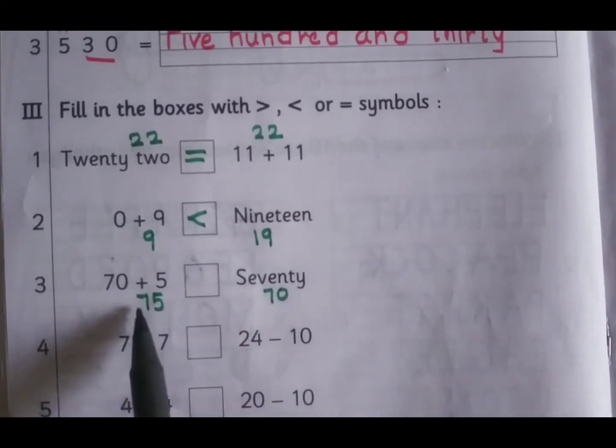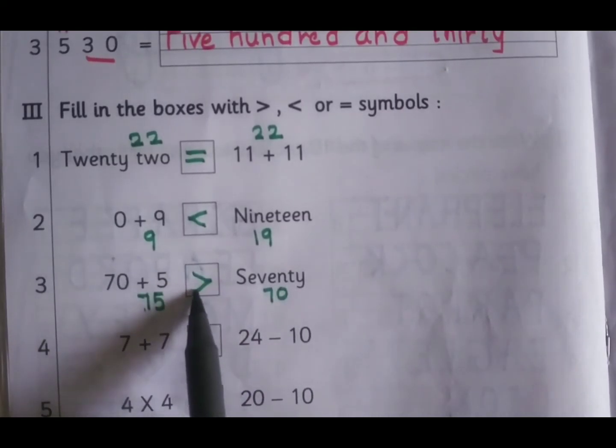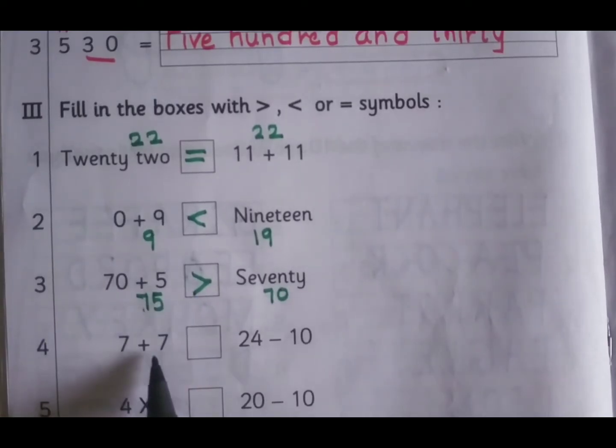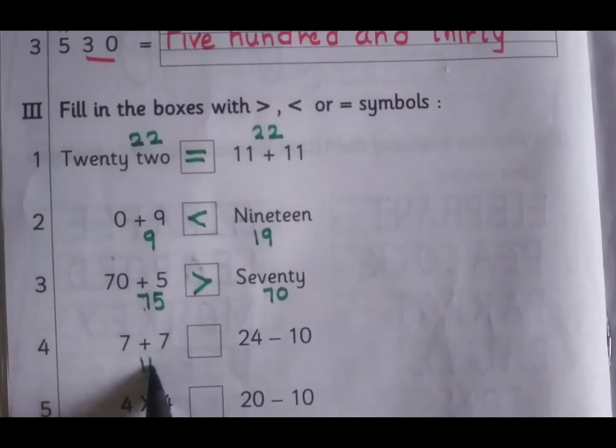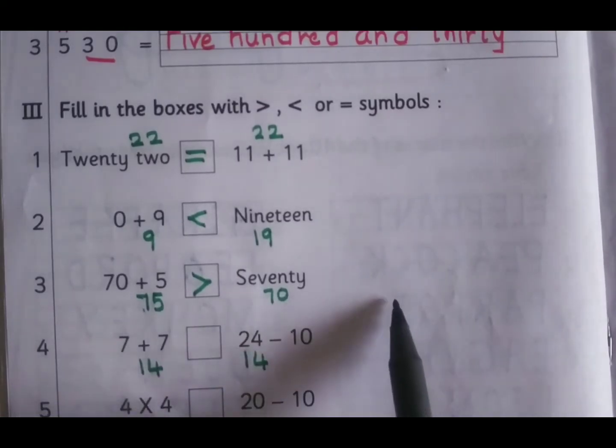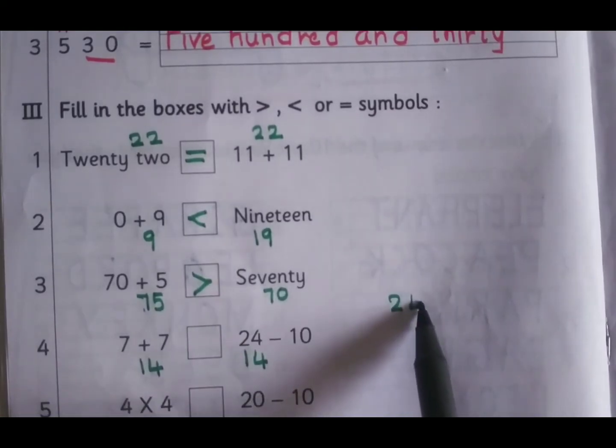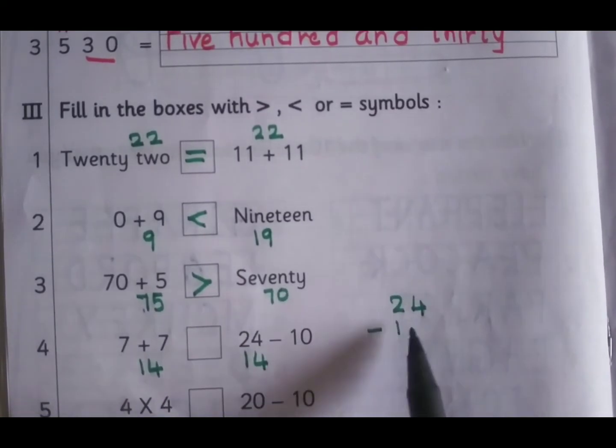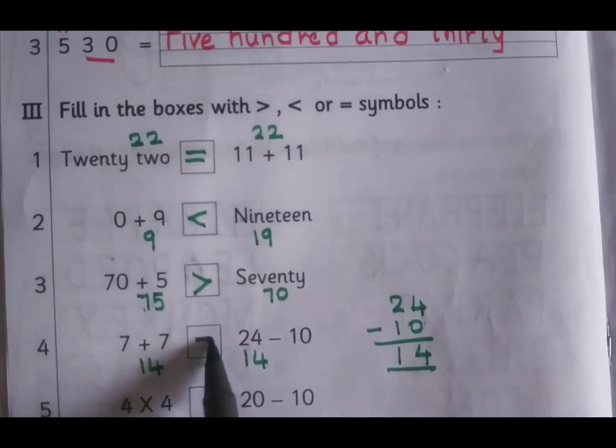70 plus 5 is 75, and this is 70, 75 is greater than 70. 7 plus 7, 7 plus 7 is 14. 24 minus 10, 24 minus 10, that will give you 14. Can do rough work also: 24 minus 10, 4 minus 0 is 4, 2 minus 1 is 1, here 14, here 14, same number, equal sign.